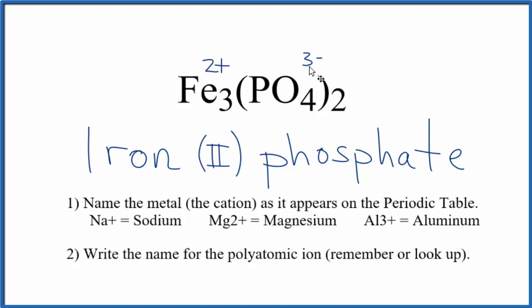So we need two phosphate ions, each one's three minus, and three iron atoms, each one's two plus. So the charge all balances out, net charge of zero. This is Dr. B with the name for Fe₃(PO₄)₂.